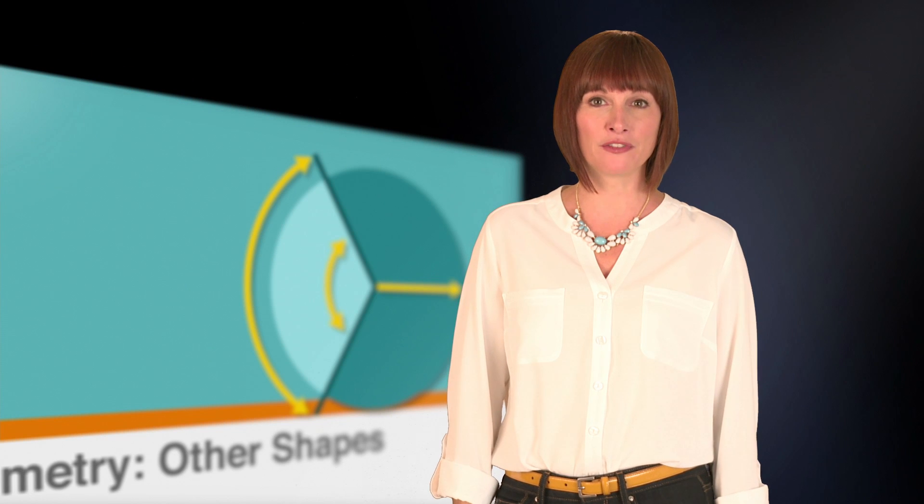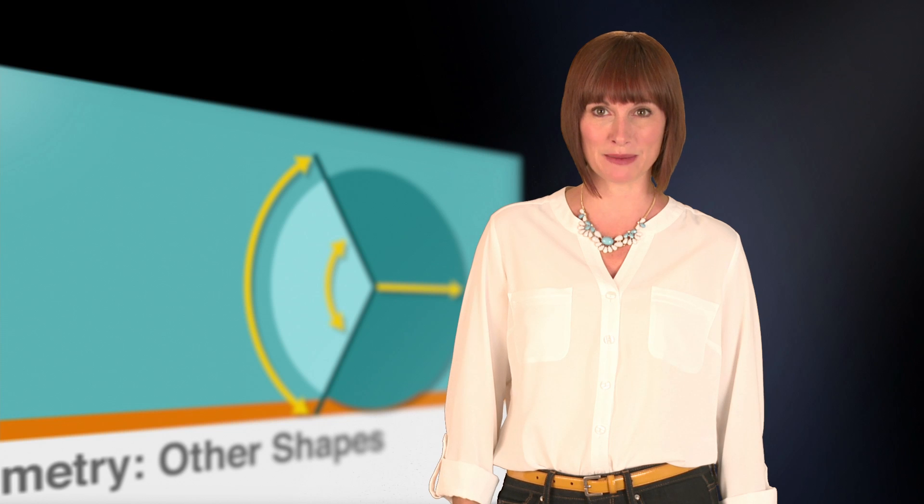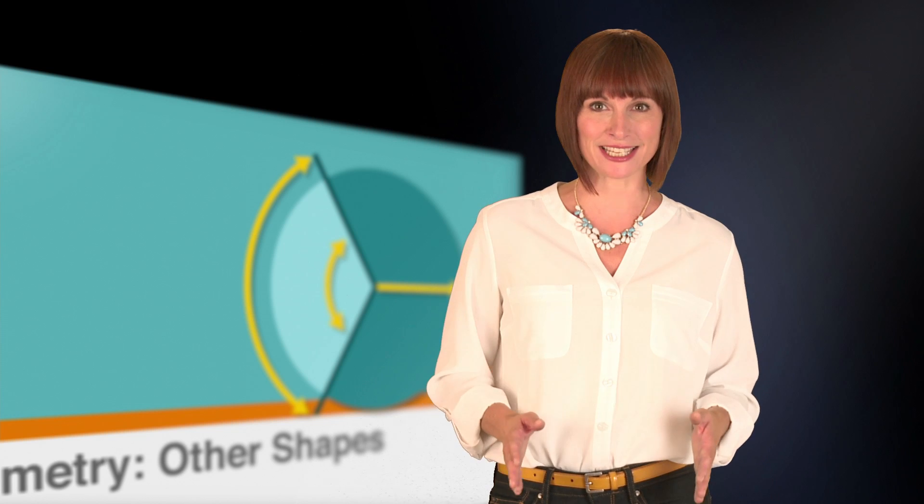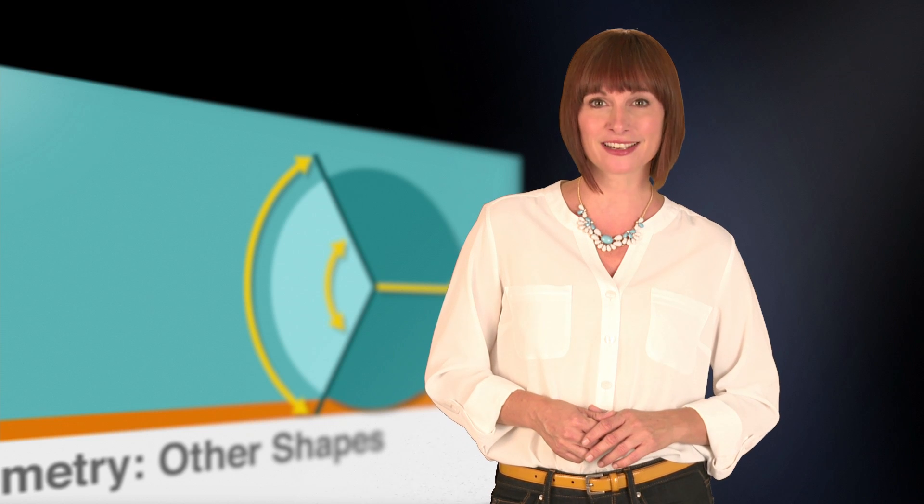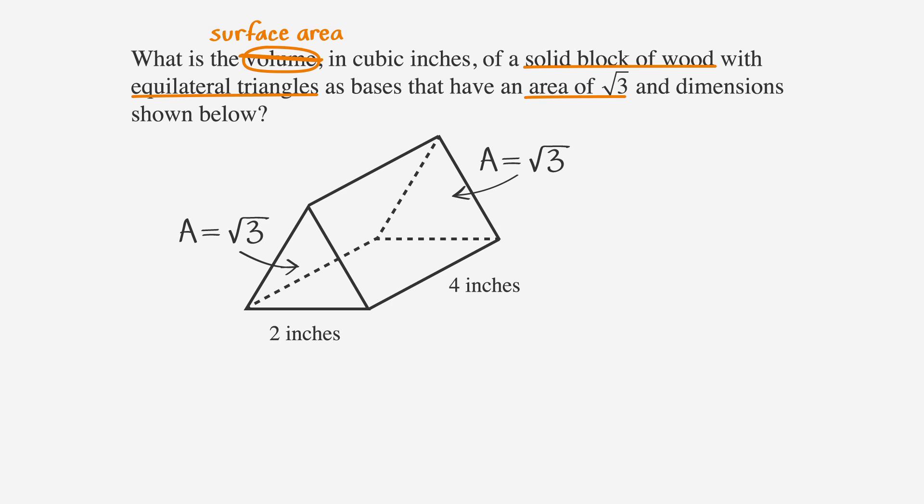Now that we've reviewed finding volumes of three-dimensional shapes, we're ready to find the surface area of these shapes. Let's look at the shape from the last question and find the surface area. The surface area of a solid is the area of each face added together. This shape has five faces: two are triangular bases, and three are rectangular faces.